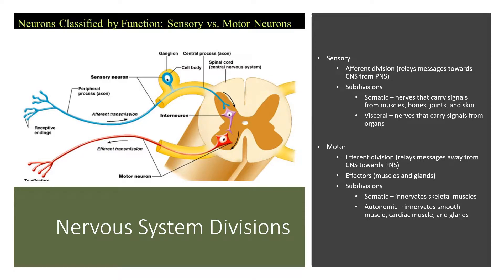The efferent division is the motor division. Efferent just means carrying something away from something else. For instance, efferent bronchial arteries in a shark carry oxygenated blood away from the gills. In the efferent division of the nervous system, messages are carried away from the central nervous system and towards the peripheral nervous system—essentially towards what are known as effectors, which are basically just muscles and glands.